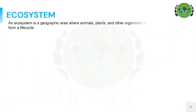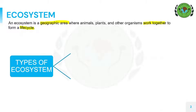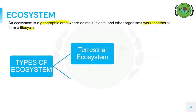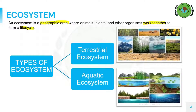After learning this chapter so far, we now have a comprehensive idea about what an ecosystem really is. To sum it up, an ecosystem is a geographic area where animals, plants and other organisms work together to form a life cycle. There are two types of ecosystem: the first being terrestrial ecosystem and the second being aquatic ecosystem. In this video, we'll be learning in detail about these two types.